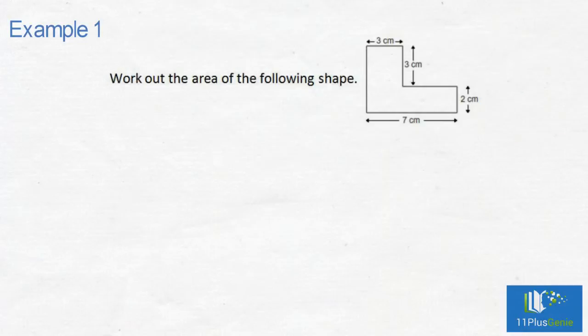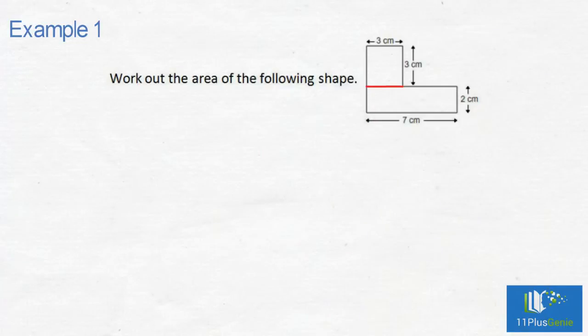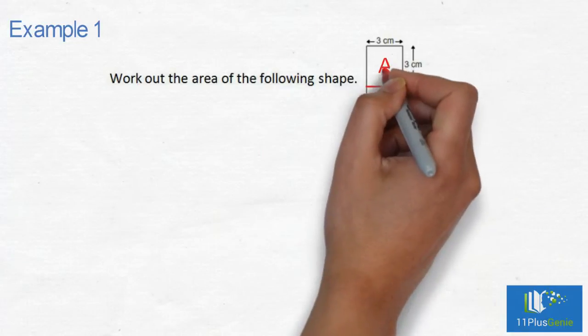Example 1. Work out the area of the following shape. We can split this shape into a square and a rectangle by drawing a line here.